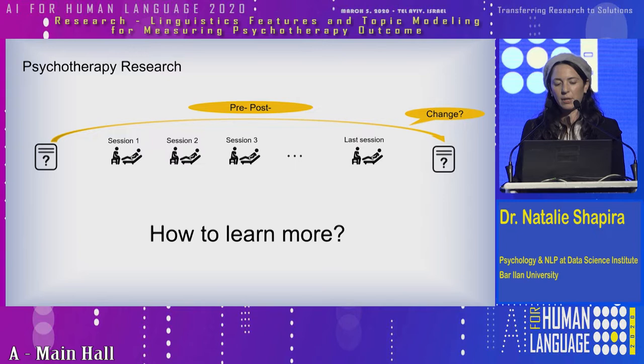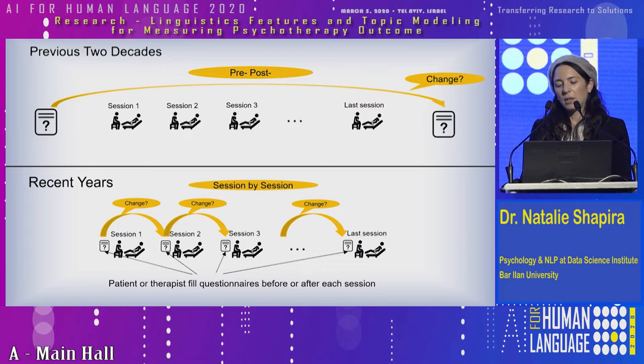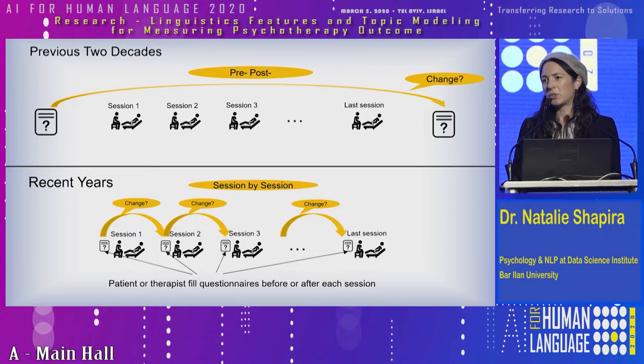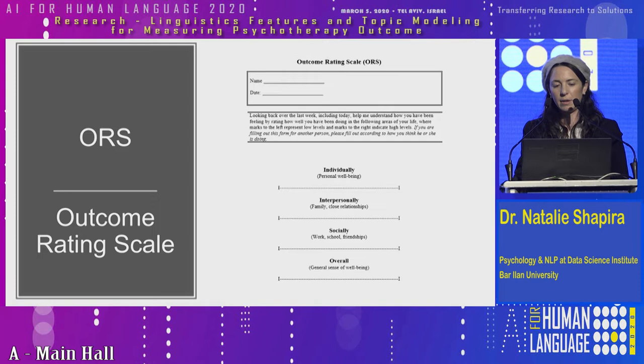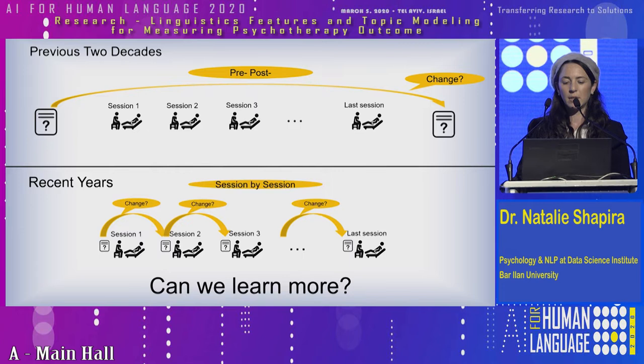In recent years, more and more studies are checking the therapeutic process at higher level resolution — questionnaires are filled session by session. An example of such a questionnaire is the ORS. Here you can see the questionnaire. It has four scales. The patients have to report how they've been doing with respect to individually, interpersonally, socially, and overall. And the question is again, can we learn more? And the answer is yes.